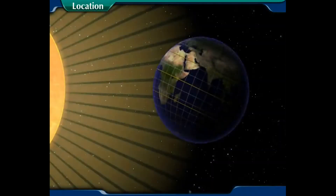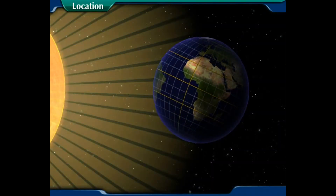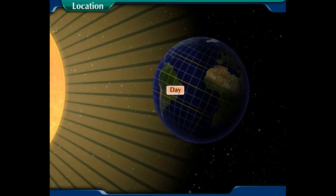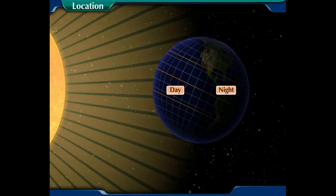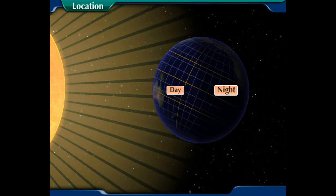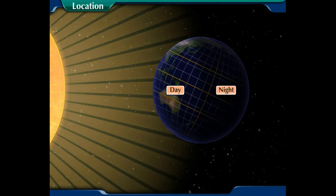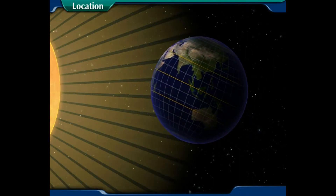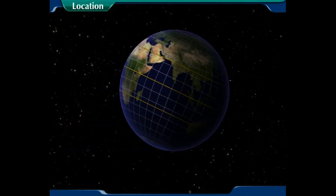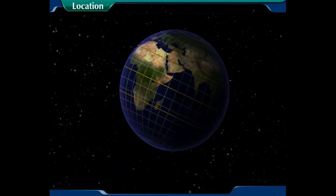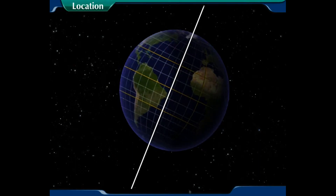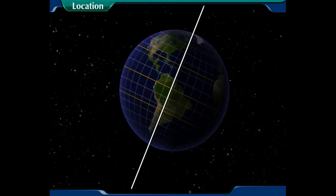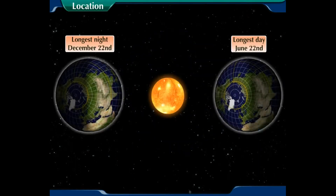Let us see its impact on the duration of days and nights of a place. As we know, the length of a day and night varies throughout the year. This variation is caused by the tilt of the earth's axis of rotation around the sun.